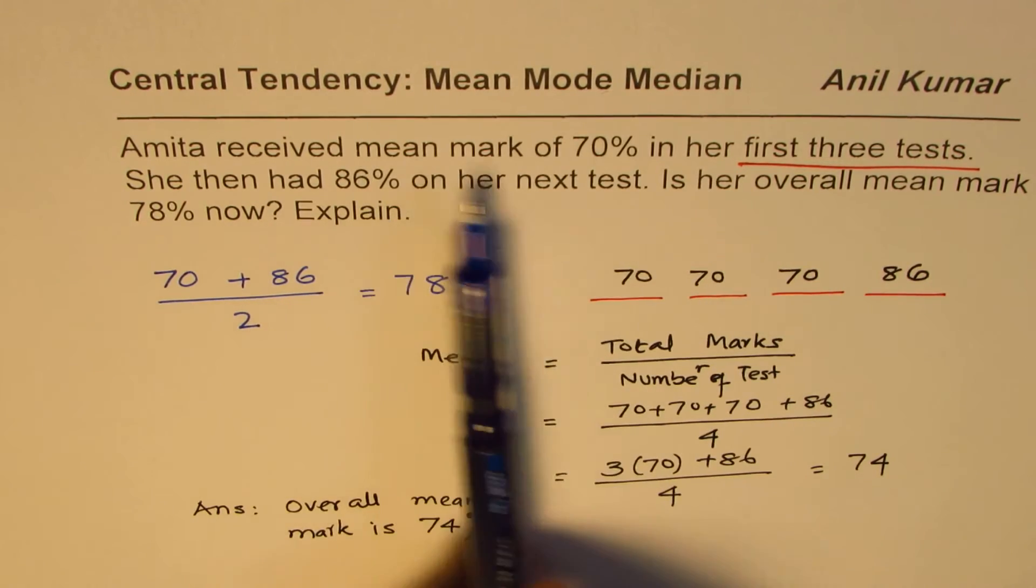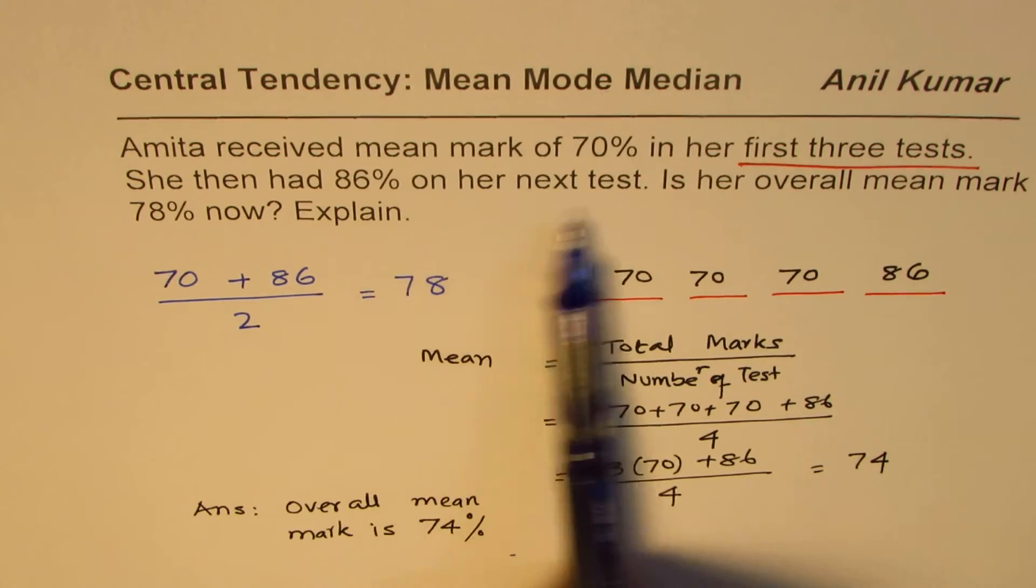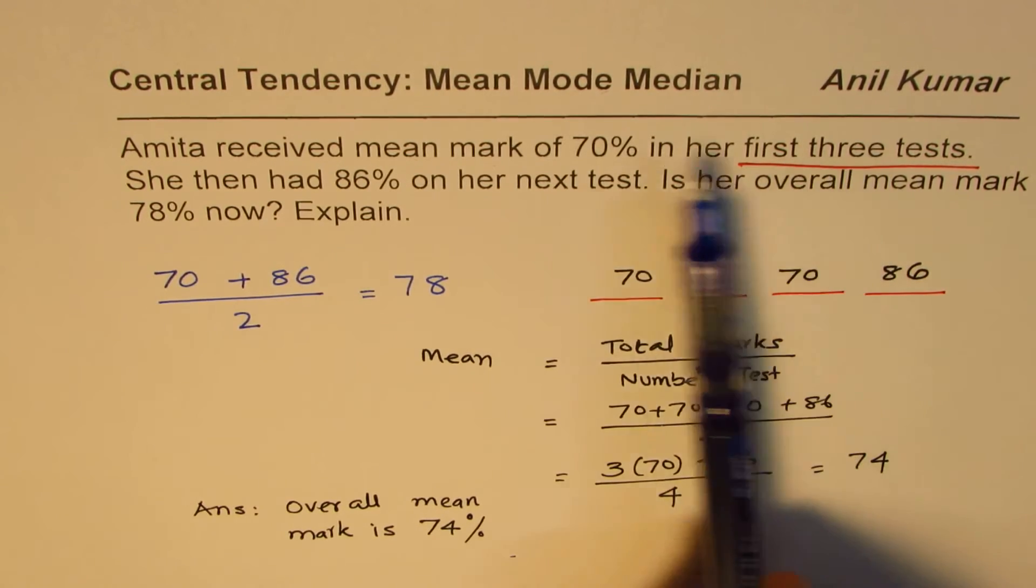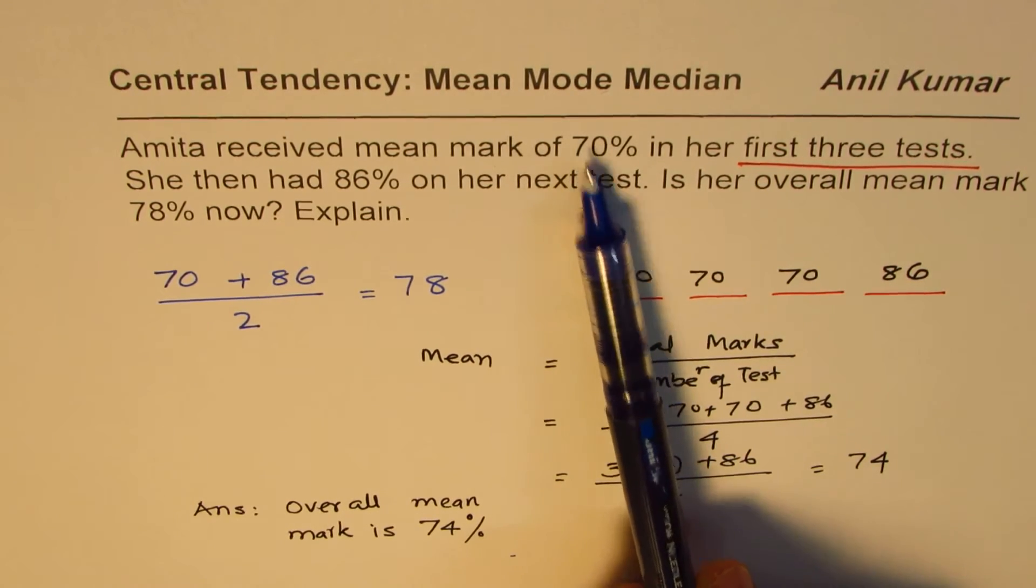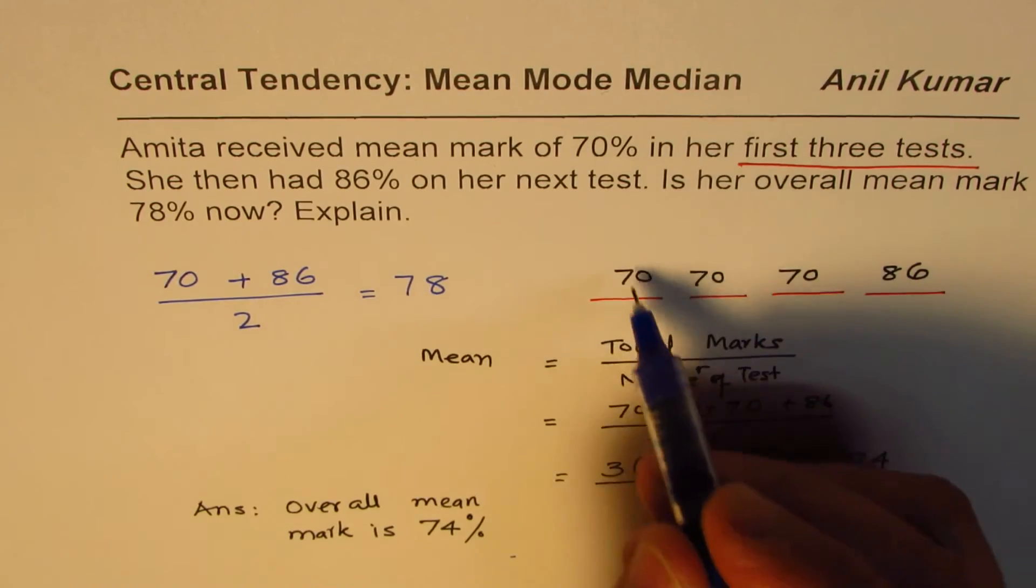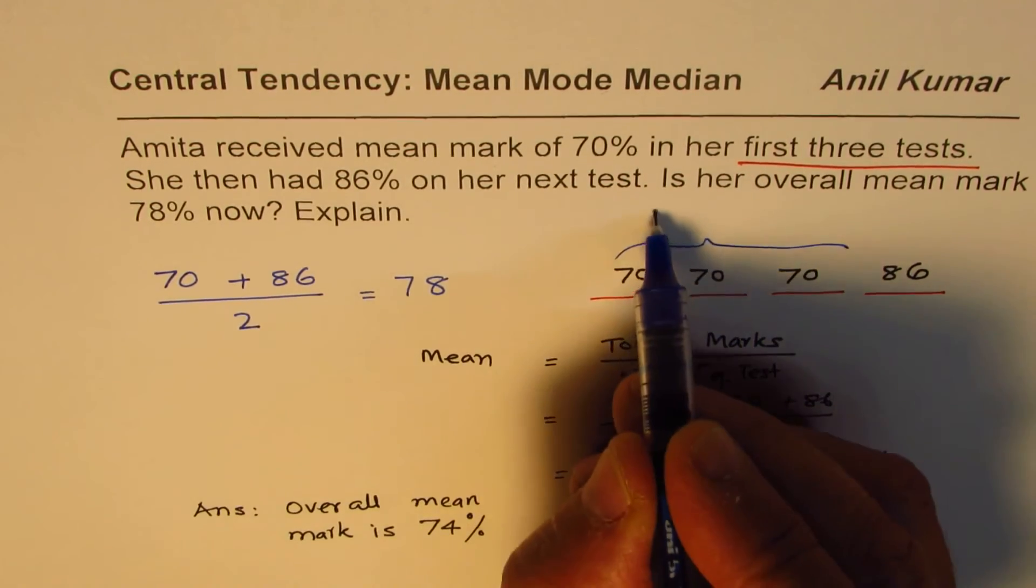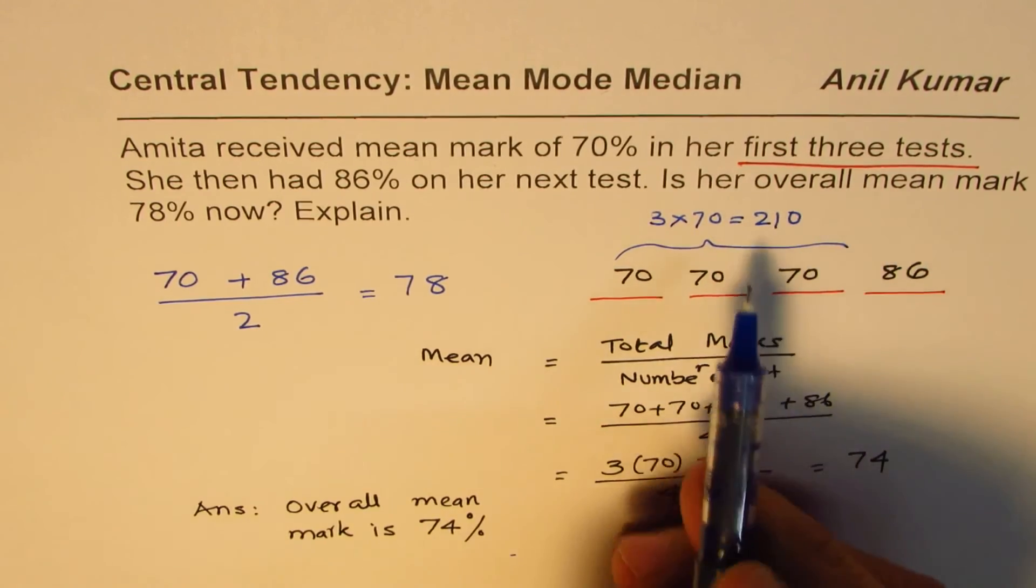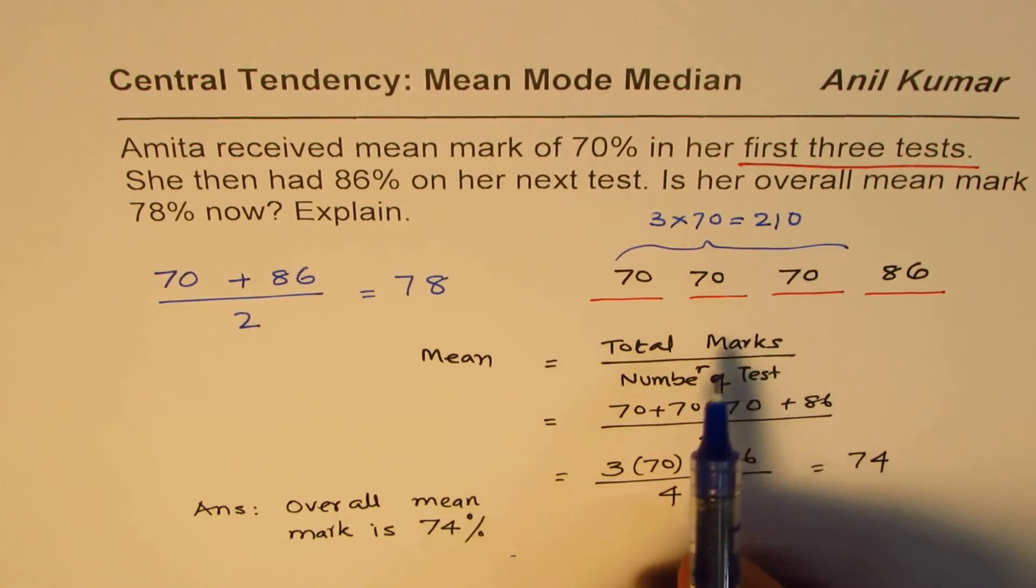If you have a mean or average marks given to you, then total is average times number of tests. So 3 times 70 is the total of first 3 tests. So this combination should be 3 times 70, which is 210. You can add 86 to 210 and divide by 4.